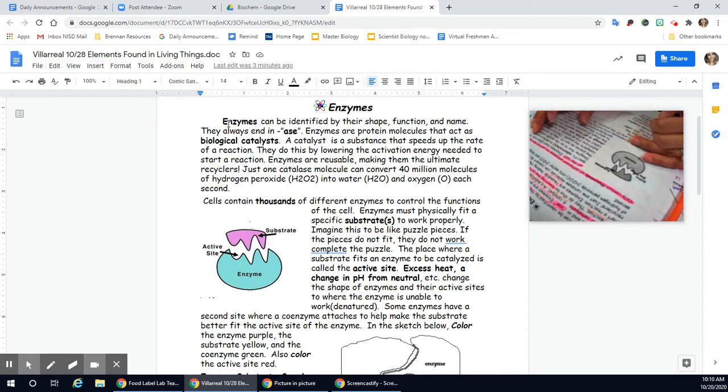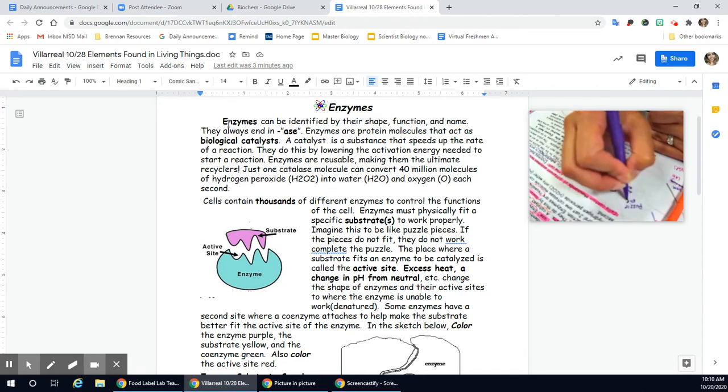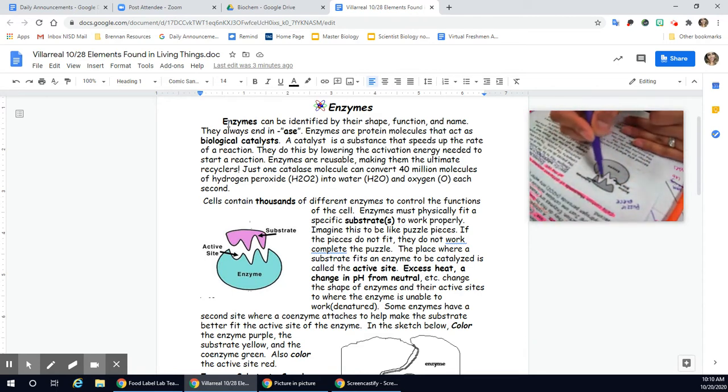Cells contain thousands of different enzymes to control the functions of your cell. So this is on an everyday, second-by-second basis. They are doing this. Enzymes must physically fit. This is important. Enzymes must physically fit a specific, what's called substrate, in order for them to work properly. So that is shown here in this picture. These are like puzzle pieces. It's like a puzzle piece here. If they do not fit, then you can't force them to fit.